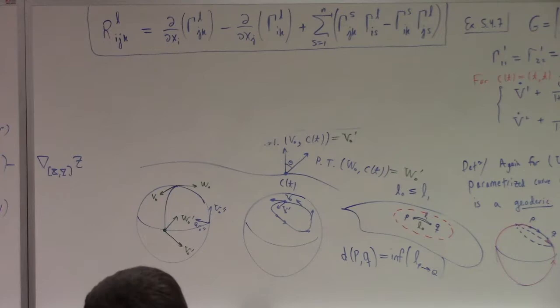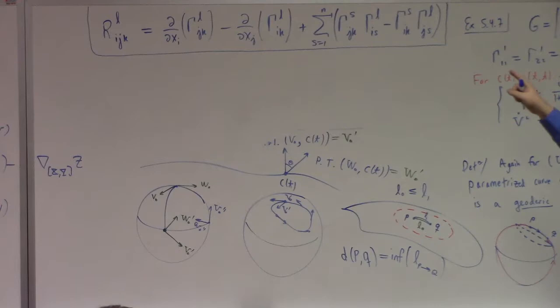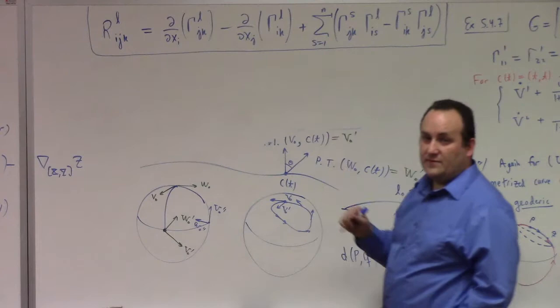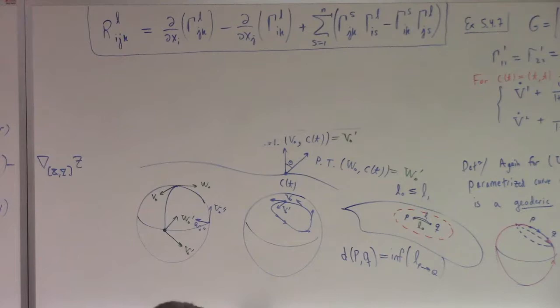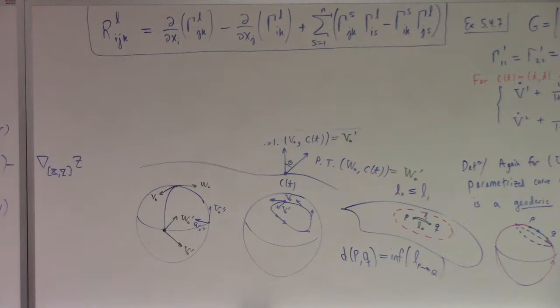Maybe next semester. So you remember how the gammas are built. They're derivatives of the metric, right? They're ugly combinations of the derivatives of the metric. So this is like second derivatives of the metric. So the curvature has to do with the second derivatives of the metric. If the metric is non-constant, then this might be non-zero.